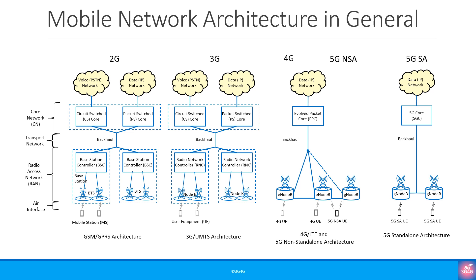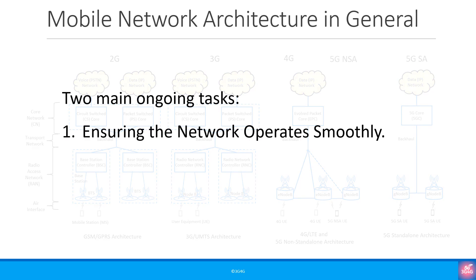Let's say a new mobile network operator has deployed their network. Everything is working fine and they've started selling SIMs. Many users have bought the SIMs and are now using the network. There are two main ongoing tasks the operator needs to focus on. The first task is to make sure the network is running smoothly. If there are any failures, the operator should be able to detect them immediately so they can fix the problems. This is the job of the operation support systems, or OSS.